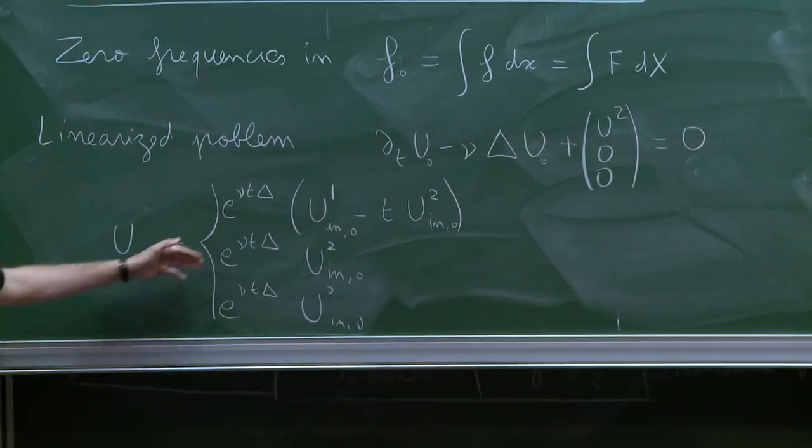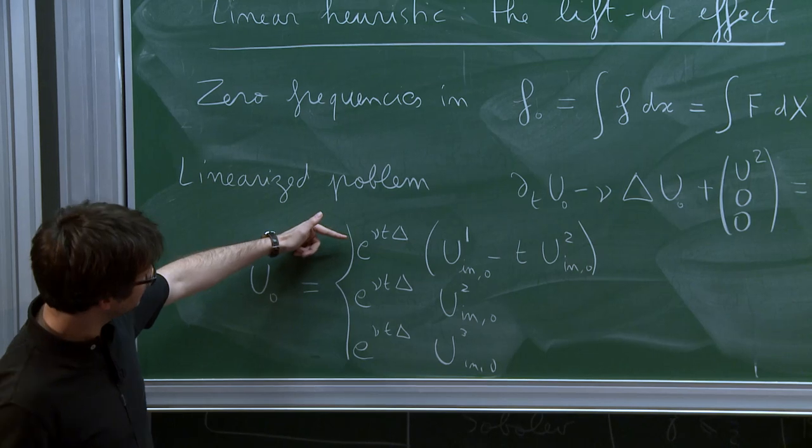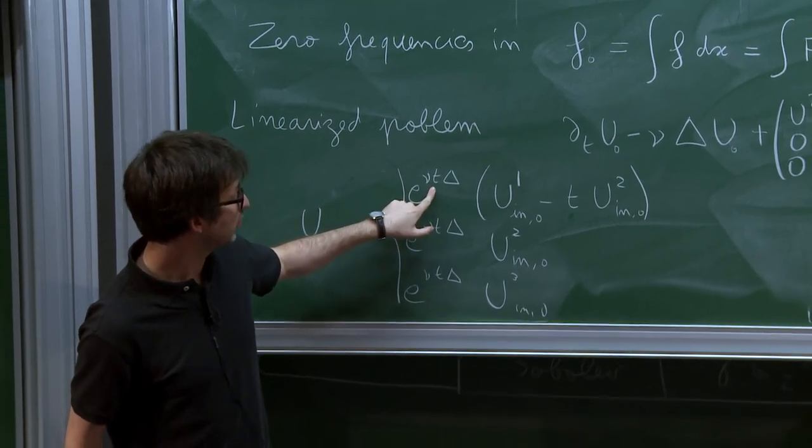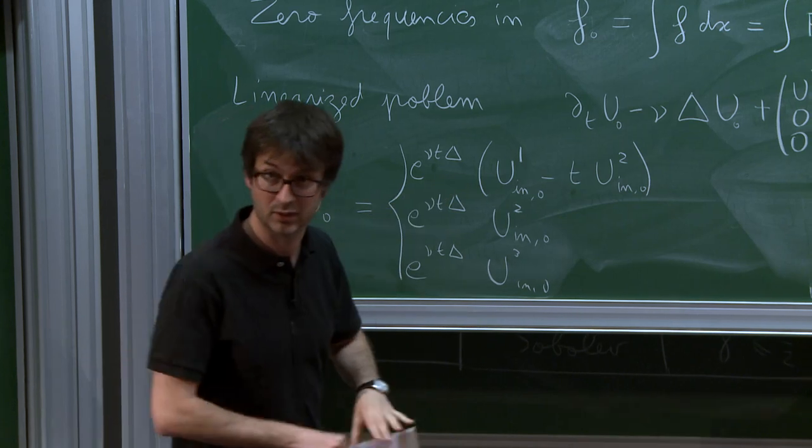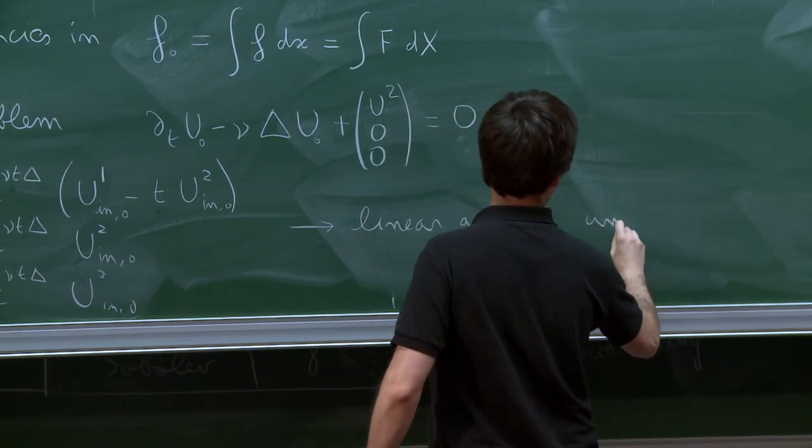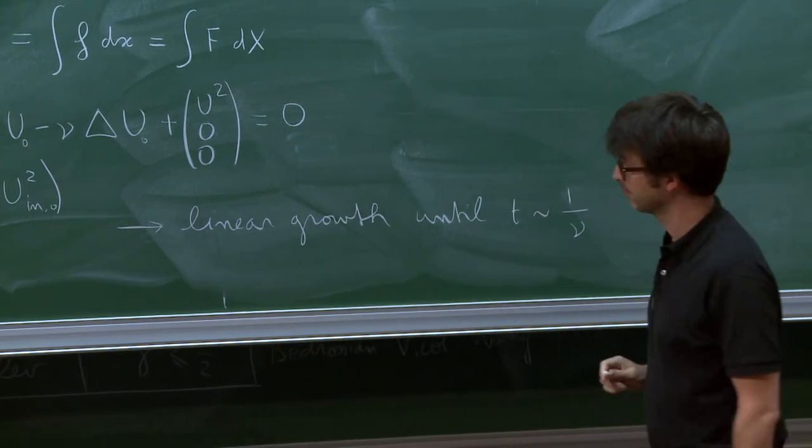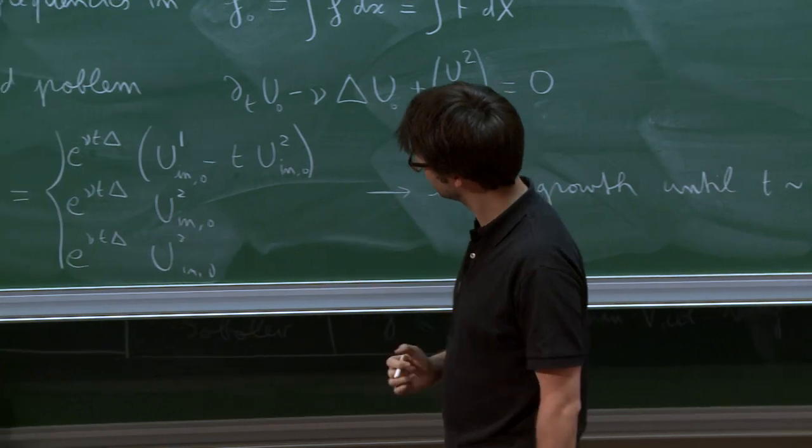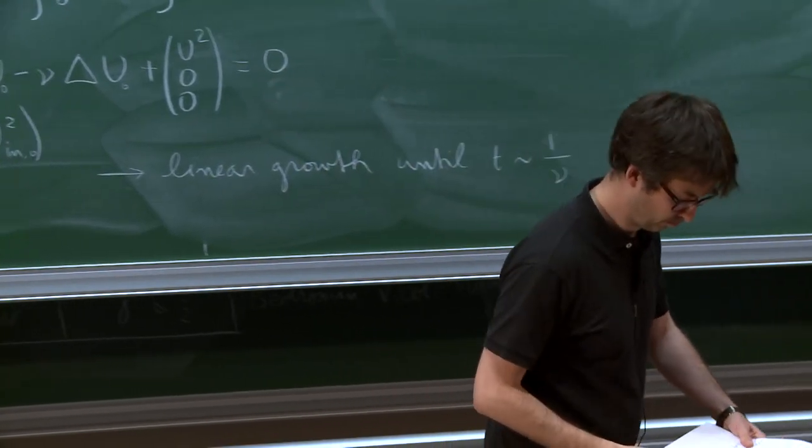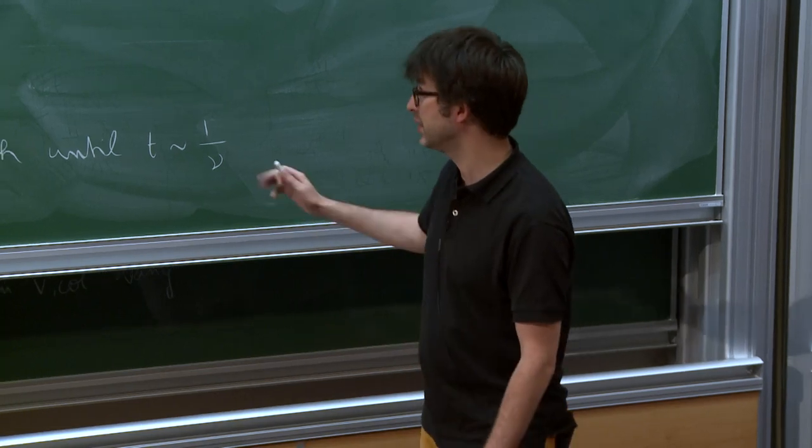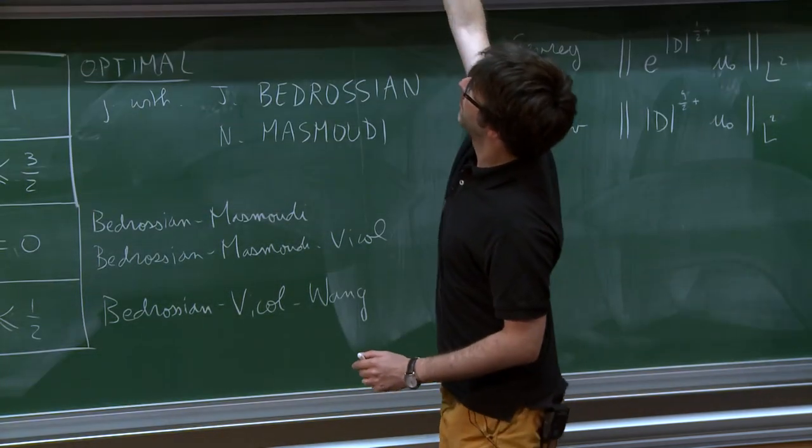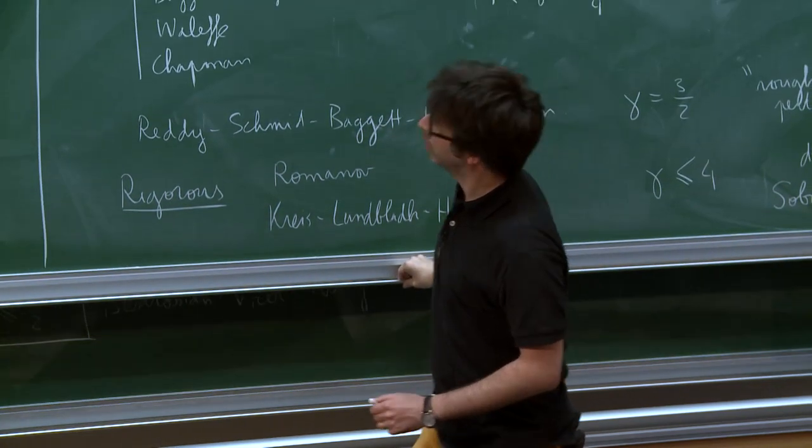So, obviously, the second and third coordinates are well-behaved. But this one, you see, it grows linearly until the heat kernel kicks in, but this happens only at a time t like 1 over nu, okay? So this gives linear growth until t like 1 over nu. And you see, in dimension 2, this does not occur, because u has to be zero due to the divergence-free condition. So that's the main source of instability, and it's really a 3D effect.